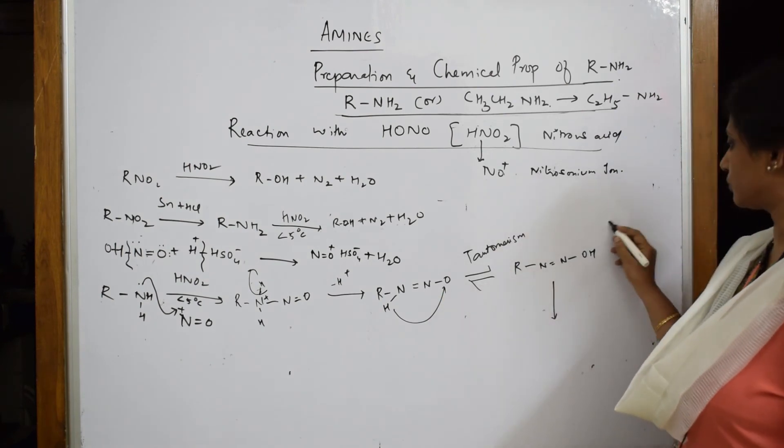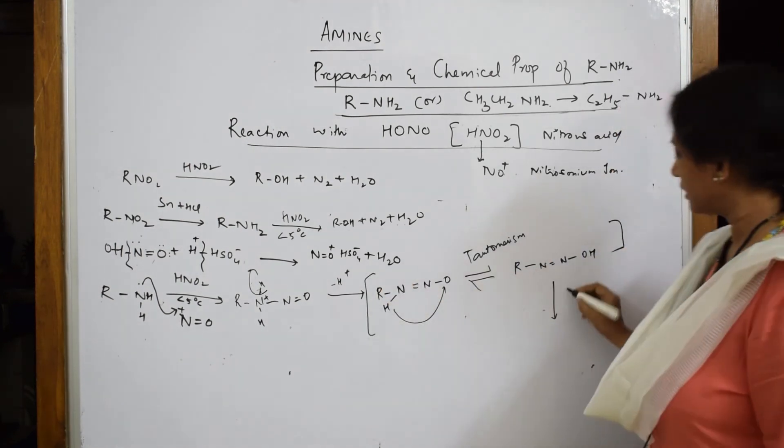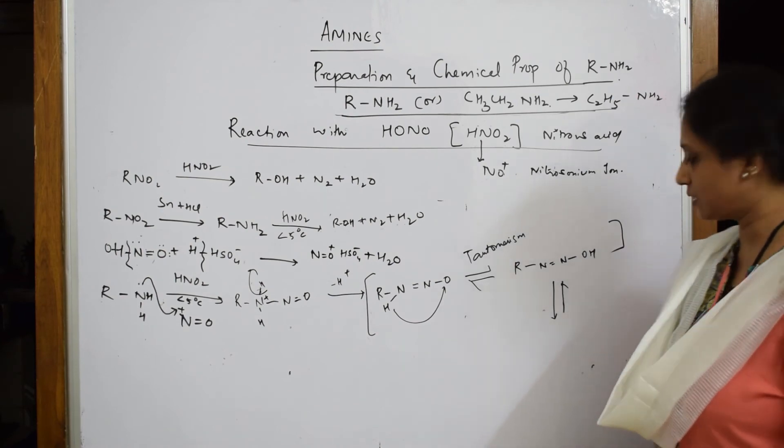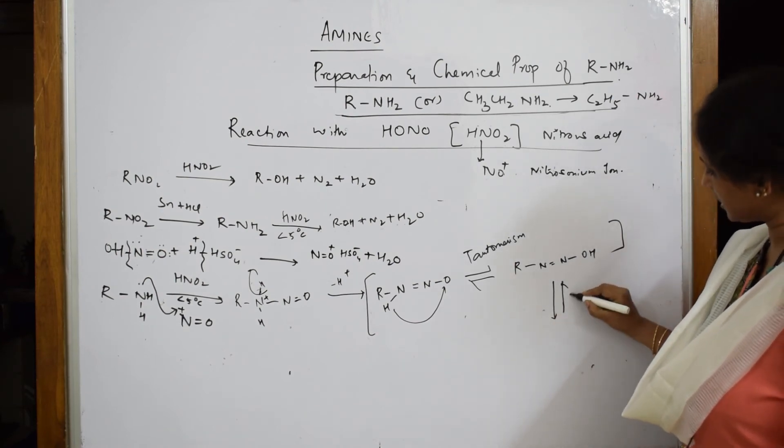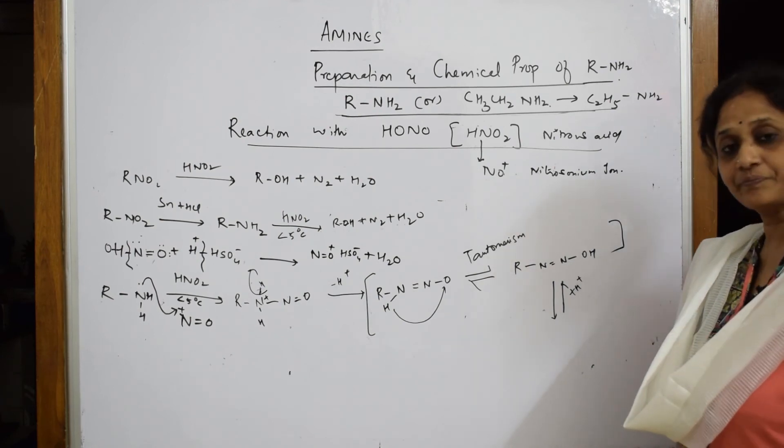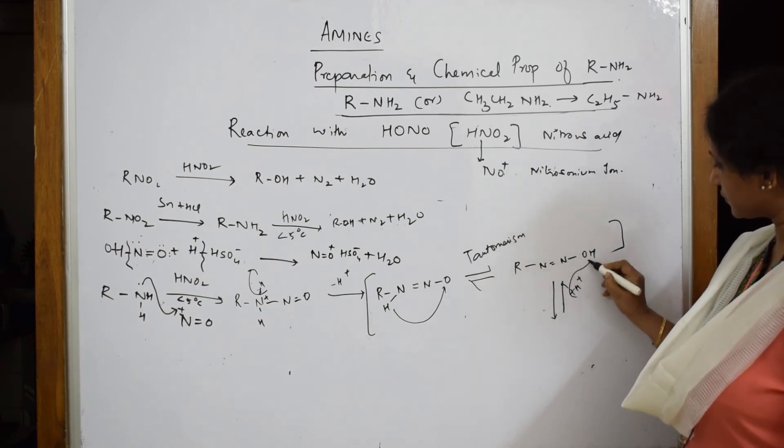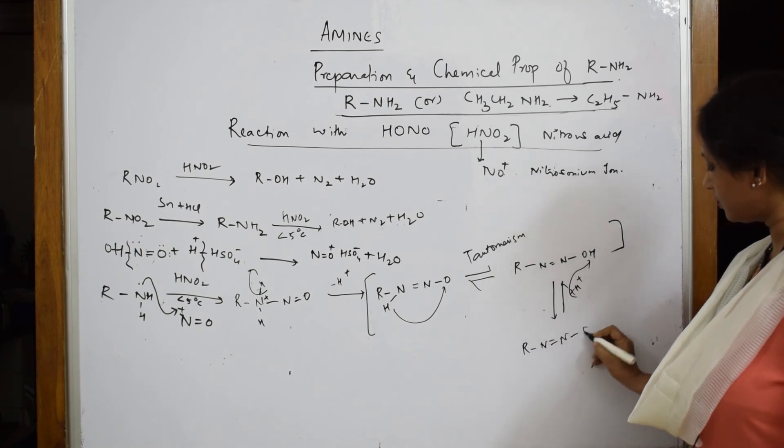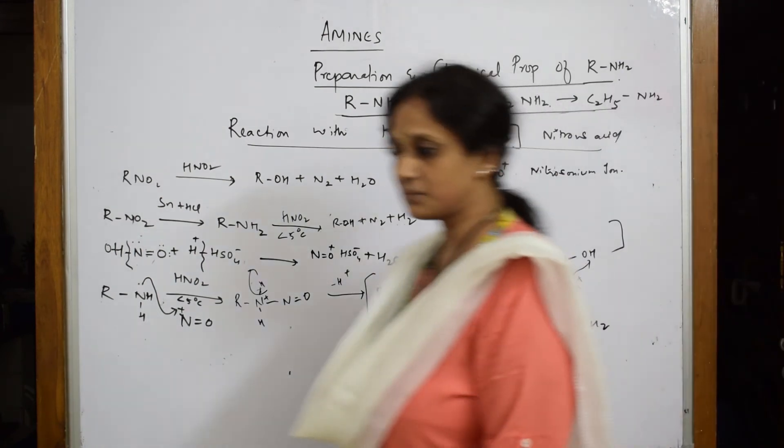This is your keto group, this is your enol group - tautomers. Now to this tautomer, this particular enol compound, I'm going to introduce H+. This H+ is going and adding to this compound: R-N=N-OH2+. We're gradually coming to the final product.